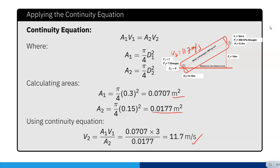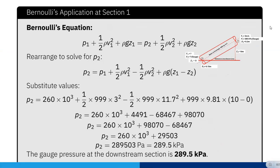We know v2, we know v1, p1, d1, and we have to calculate p2. For that we apply Bernoulli equation: p1 plus half rho v1 squared plus rho g z1 equals p2 plus half rho v2 squared plus rho g z2. Now rearranging to solve for p2: p2 equals p1 plus half rho v1 squared minus half rho v2 squared plus rho g times z1 minus z2.